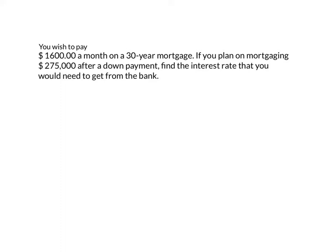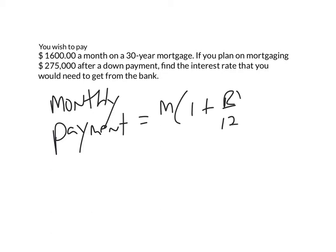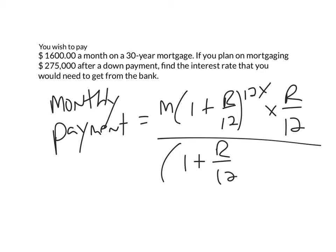So here I'm going to write out my monthly payment formula. The monthly payment is equal to M times (1 plus R over 12) raised to the 12Y power, times R over 12, all over (1 plus R over 12) raised to the 12Y power, take away 1.